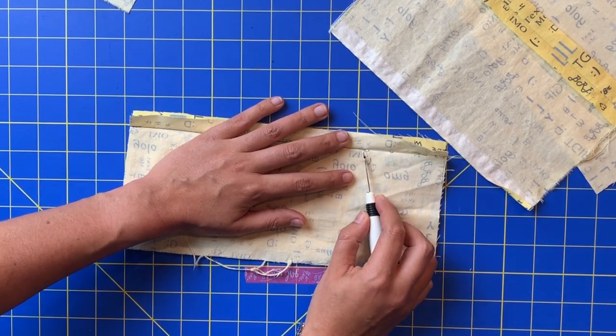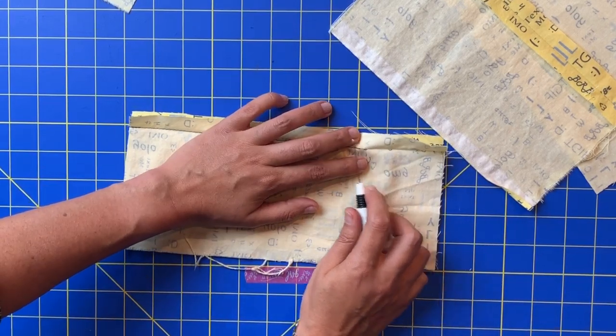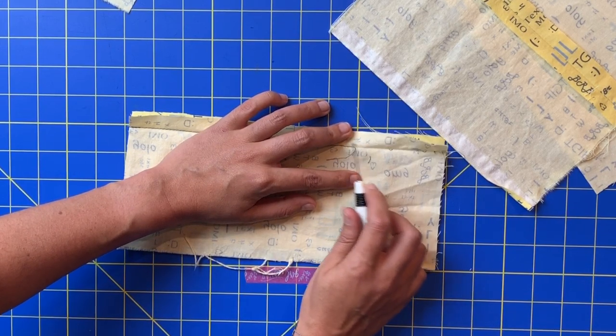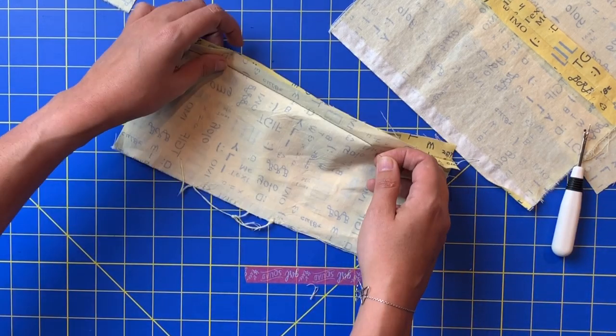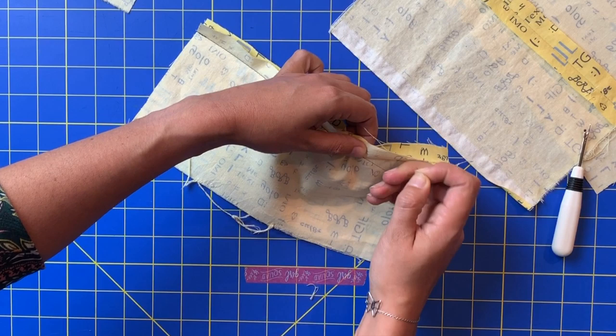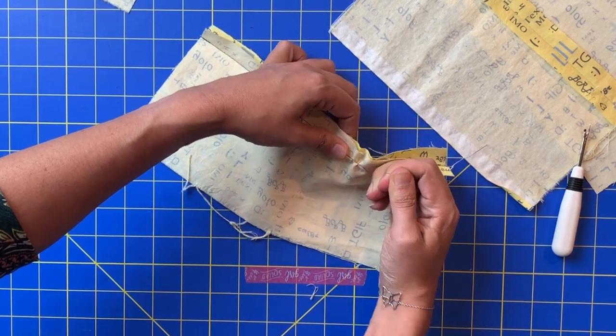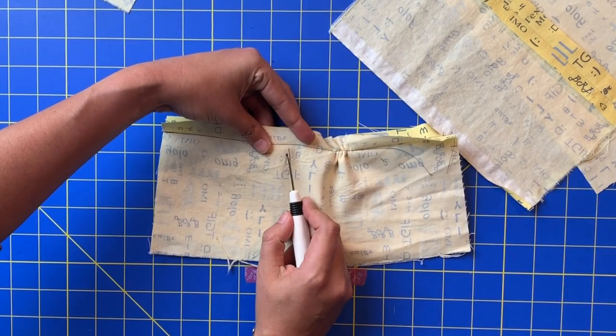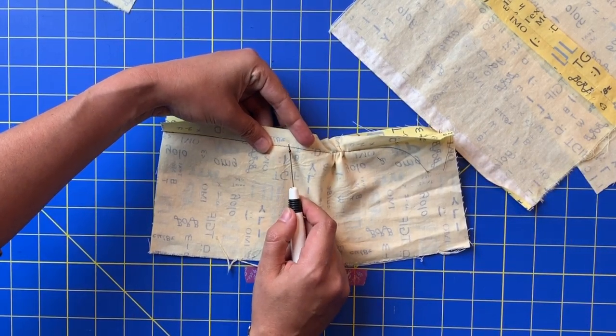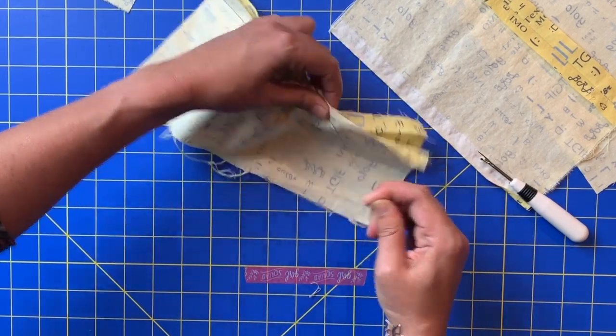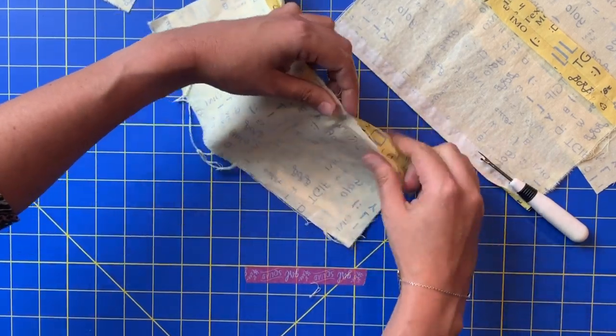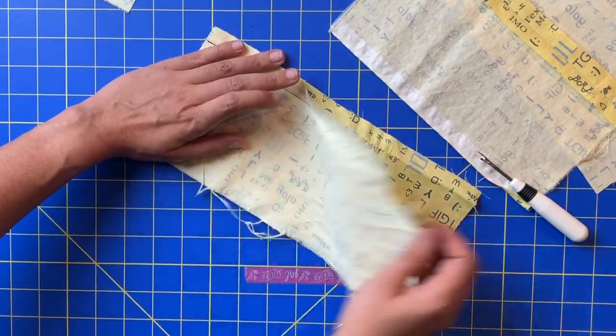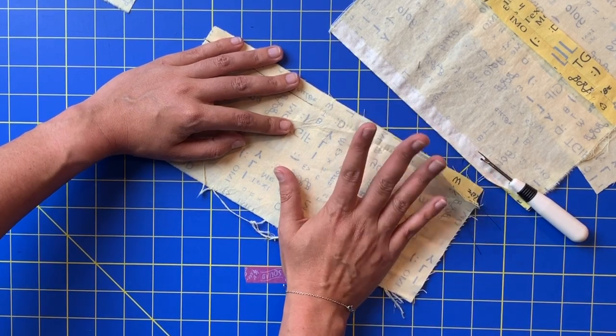The other way is to take a fairly long tail of the threads like so and this works really well on basting stitches that are a little bit longer but you get yourself a little tail going and then you pull. You might need to break it up into smaller sections depending on how tight the stitch is but you can pull it out like that and now all of this is undone. I do that too especially if it's a sturdy fabric.